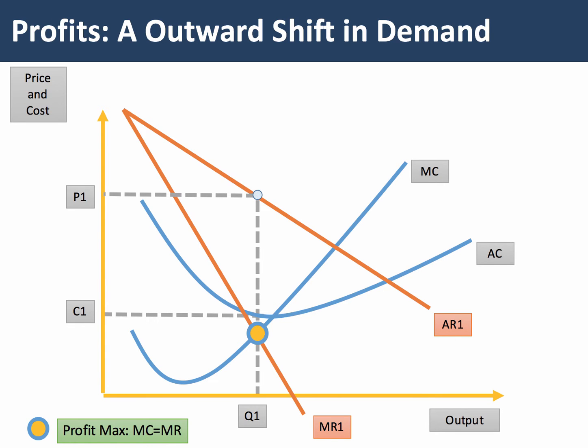Here's our starting point: a firm with a downward sloping AR and MR curve. Initially, it's at the profit maximising output where marginal cost meets marginal revenue. It can charge a price P1, the unit cost is C1, and you can see the firm is making economic profits.